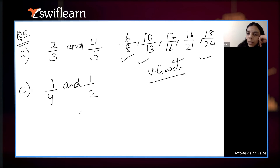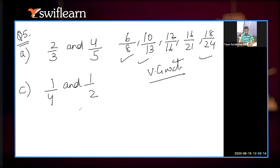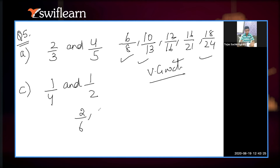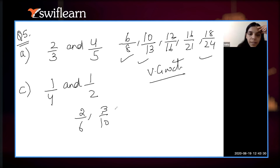1 by 4 and 1 by 2: 1 upon 4 plus 1 upon 2 is equal to 2 upon 6. Yes. Then 1 upon 4 plus 2 upon 6 is equal to 3 upon 10. Yes.